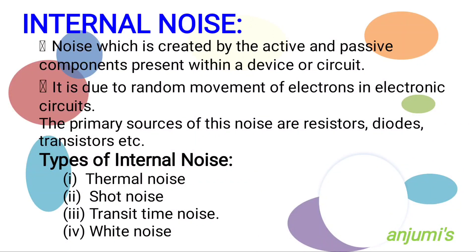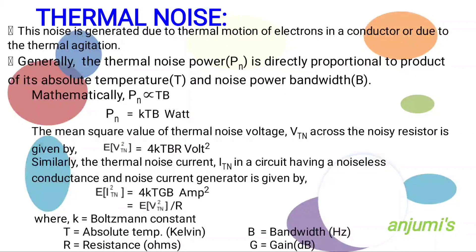Internal noise is the noise which is created within the receiver or communication system itself. Thermal noise is the noise produced by the random motion of electrons in a conductor, or due to thermal agitation. The thermal noise power Pn is directly proportional to the product of its absolute temperature T and noise power bandwidth B.